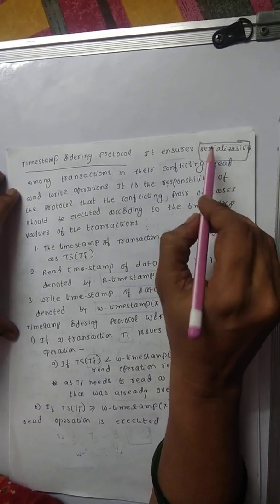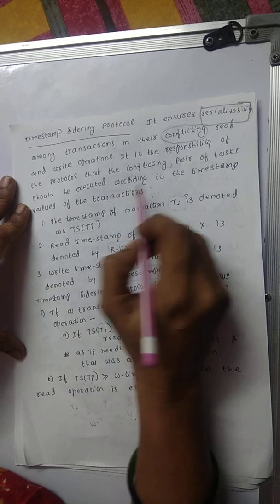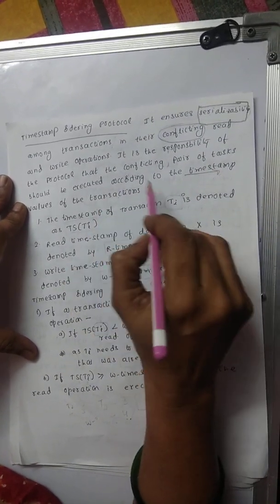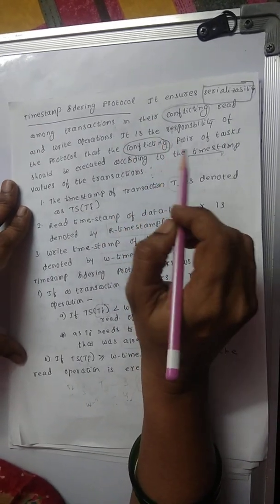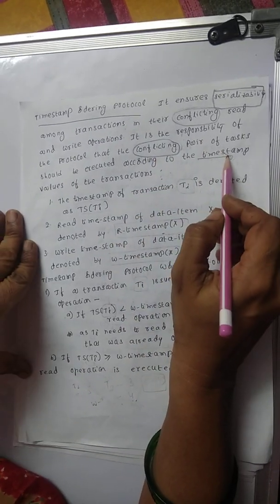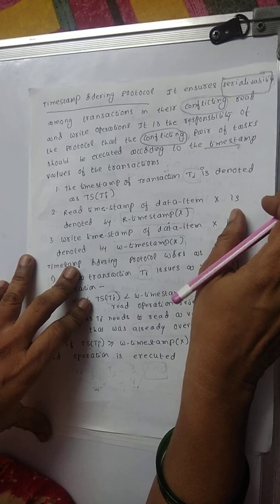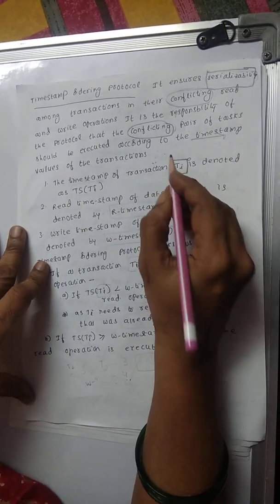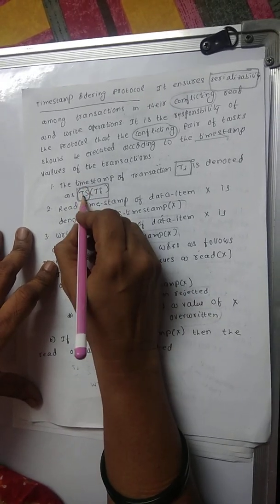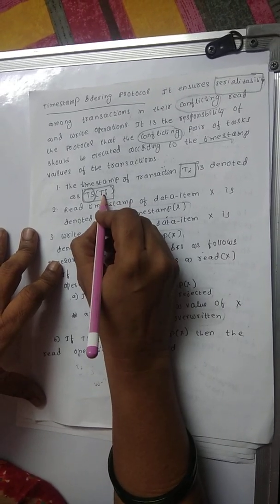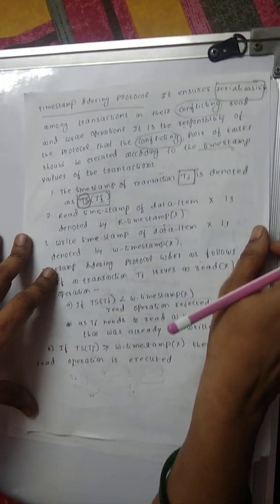The timestamp ordering protocol maintains serializability. Here we have conflicting read and write operations. The responsibility of the timestamp ordering protocol is to identify the conflicting pair of tasks, assign timestamps, and execute transactions according to timestamp order. The timestamp assigned to transaction Ti is represented as TS of Ti, where TS stands for timestamp.